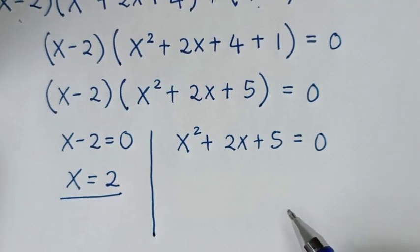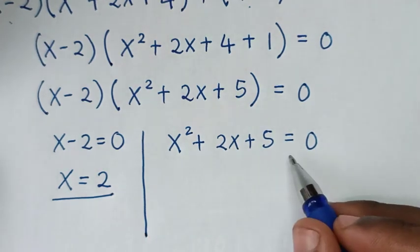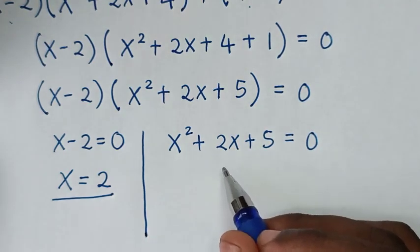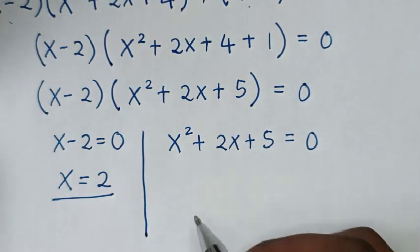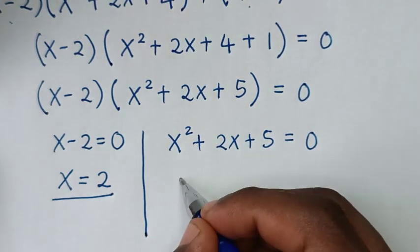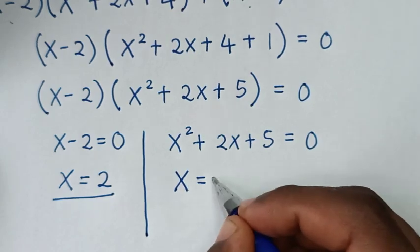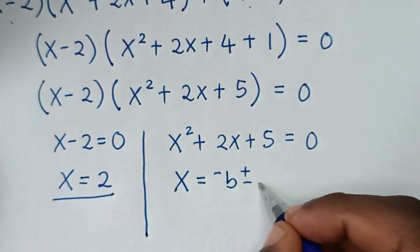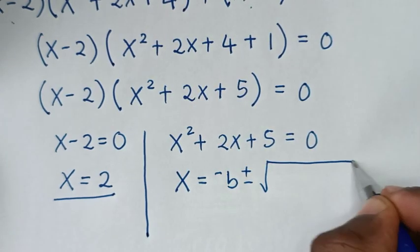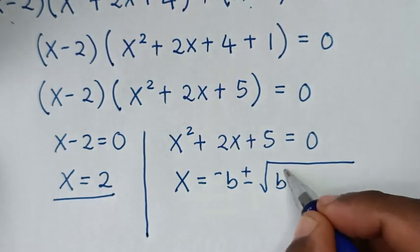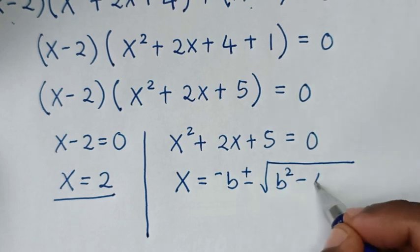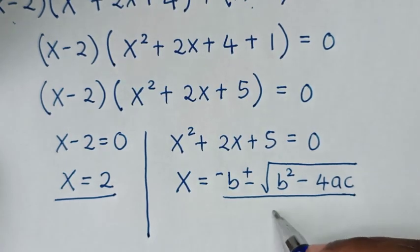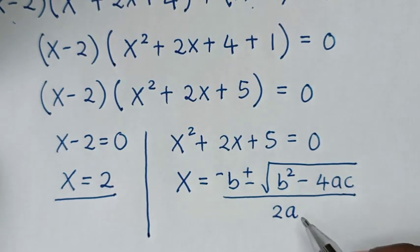To solve the quadratic equation and find the remaining values of x, we will use the quadratic formula: x is equal to negative b plus or minus square root of b squared minus 4ac, over 2a.